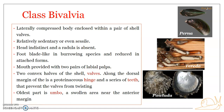The head is indistinct and a radula is completely absent in bivalves. The foot is blade-like in burrowing species and reduced in attached forms. Usually the foot is wedge-shaped or claw-shaped, ventral in position, large, and muscular. In sedentary forms, glands in the foot secrete byssus threads which are used for attaching the bivalve to substrates.